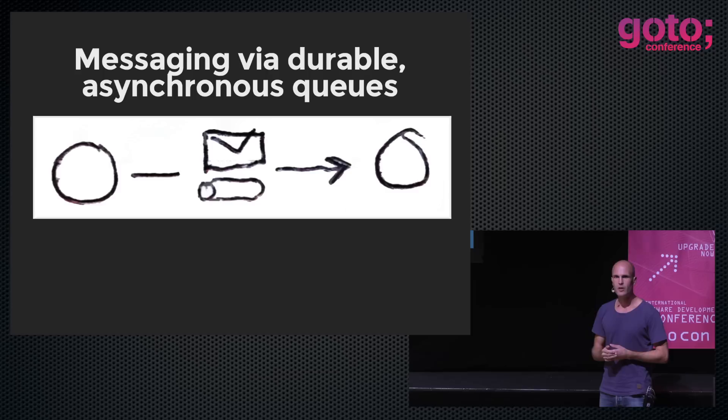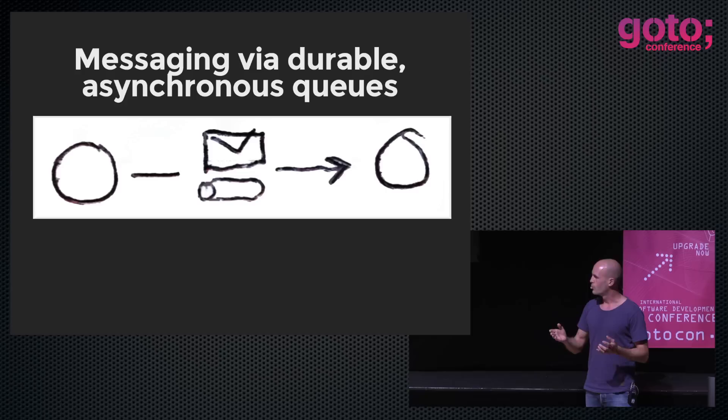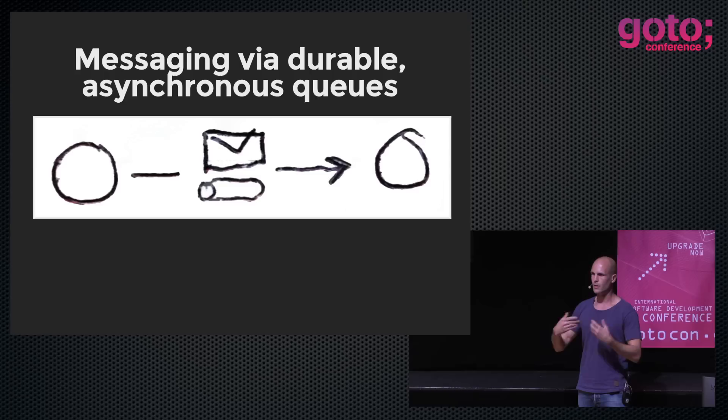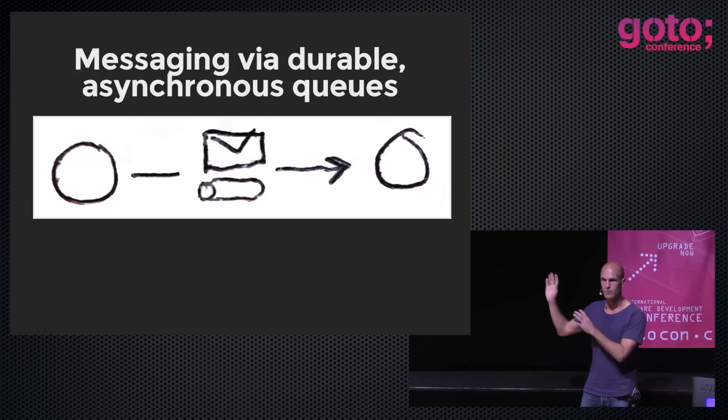It has to be asynchronous. This way, we have this fire-and-forget way of sending messages, and we will never block when sending a message. We can always count on being able to get our messages sent. Whether they're actually delivered to the recipient, that's another story — that's handled by the queues.